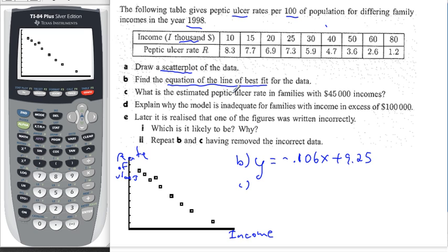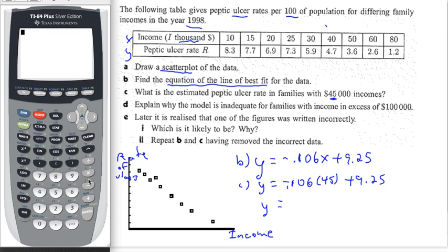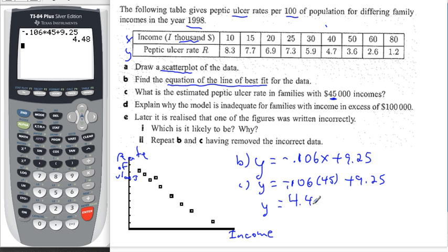I am asked for the estimated ulcer rate in families with $45,000 income. 45 is not on the table, however I can calculate it by putting 45 in place of x. So I have negative 0.106 times 45 plus 9.25. The result is 4.48 is the rate of ulcers for a family with income $45,000, and that number makes sense. It's between these two values.